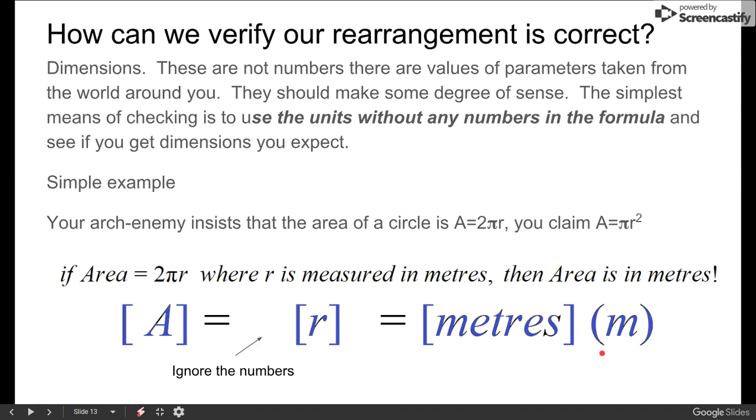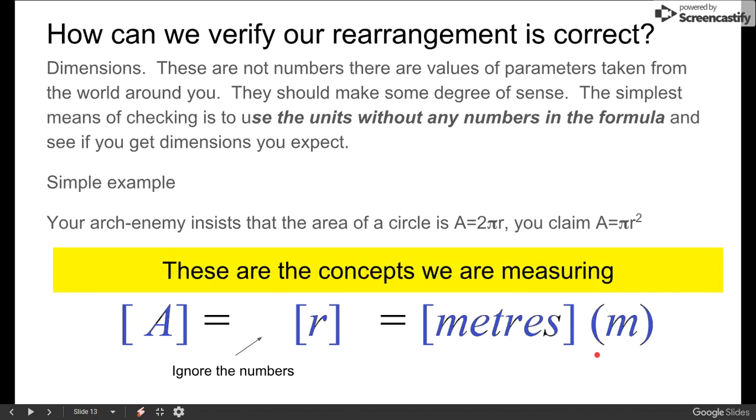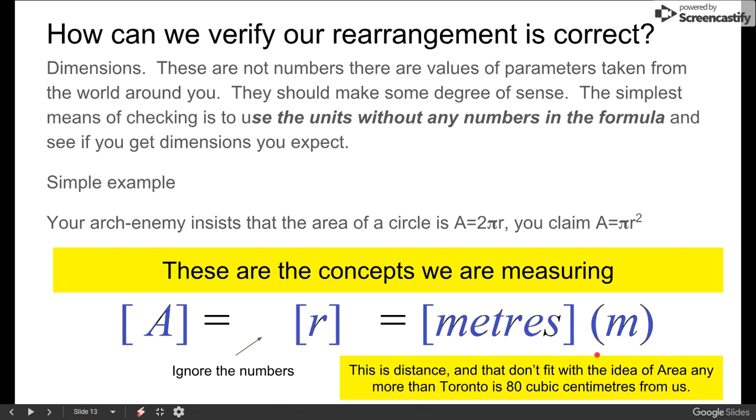Well that is not what you're expecting as an answer for area. This area is not in meters. That would be like saying Toronto is 80 liters away. There's something wrong, not with the number but with the unit. This formula cannot possibly be correct because it's not generating an answer that will be measured in meters squared. It's wrong. It doesn't matter what the numbers are, the concept is wrong.